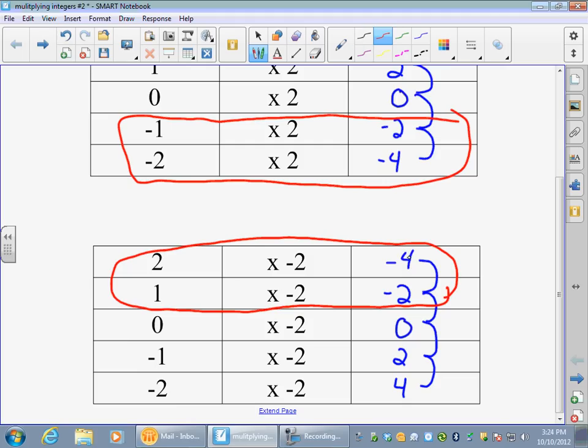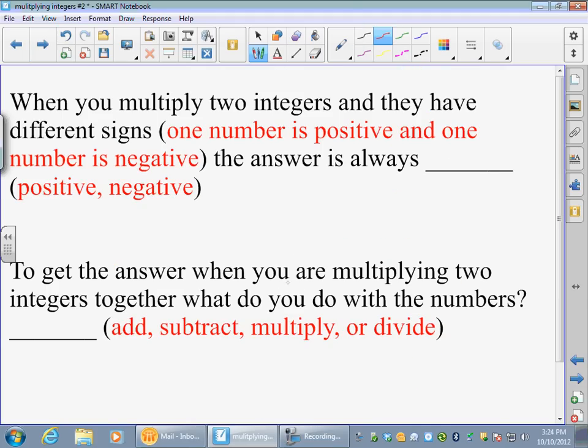And that is exactly what happens when you multiply one positive and one negative. It's always negative. Doesn't matter which one comes first or second, which one is bigger, which one is smaller. If one number is positive, one number is negative when you're multiplying, the answer is going to be negative.